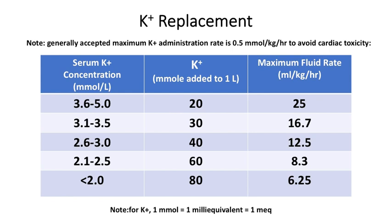The critical principle is to recognize that as you start adding significant amounts of potassium, you're reaching a maximum potassium administration rate, which is 0.5 millimole (or milliequivalent) per kilogram per hour, to avoid cardiac toxicity. This gives you an idea of the fluid rate you can give containing this amount of potassium. We're talking about milliliters per kilogram per hour, not per day. At very high levels of potassium, you should probably be monitoring the ECG at the same time as you're giving fluids.